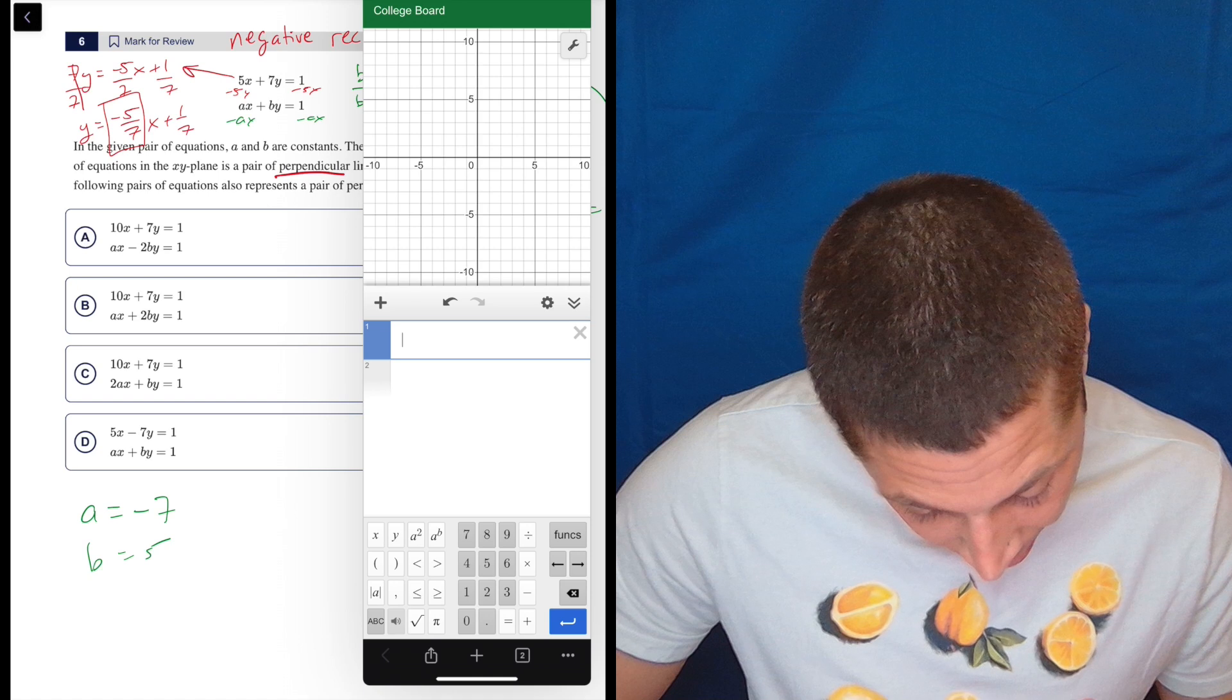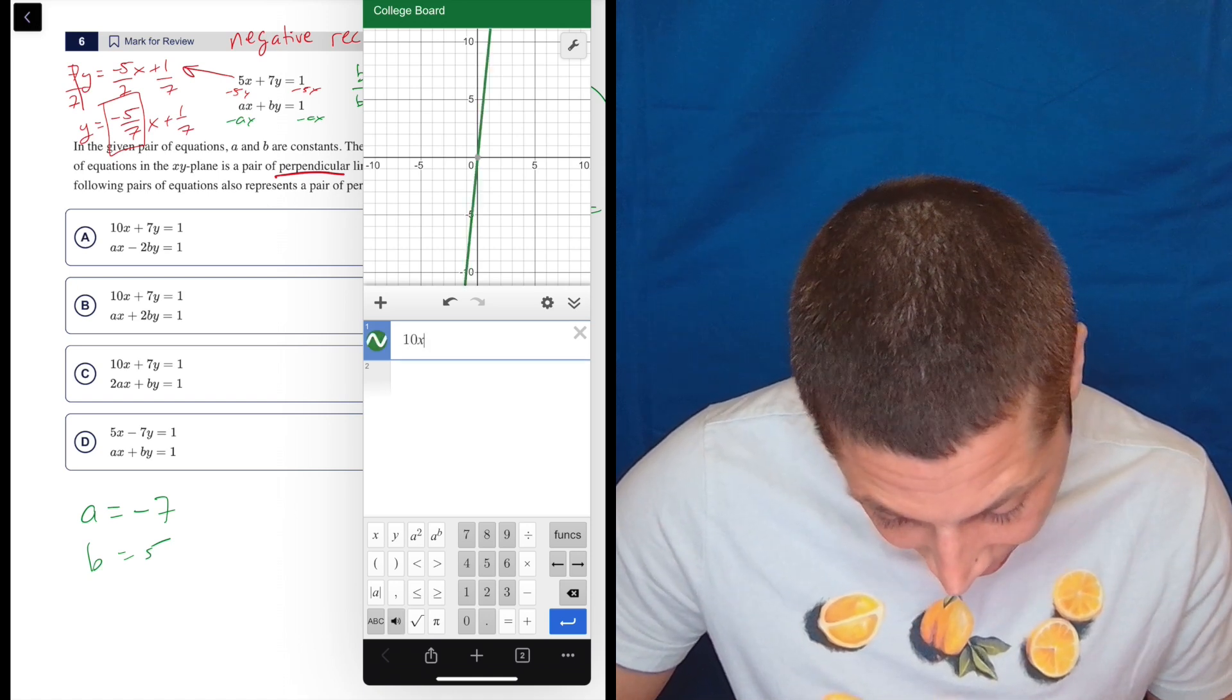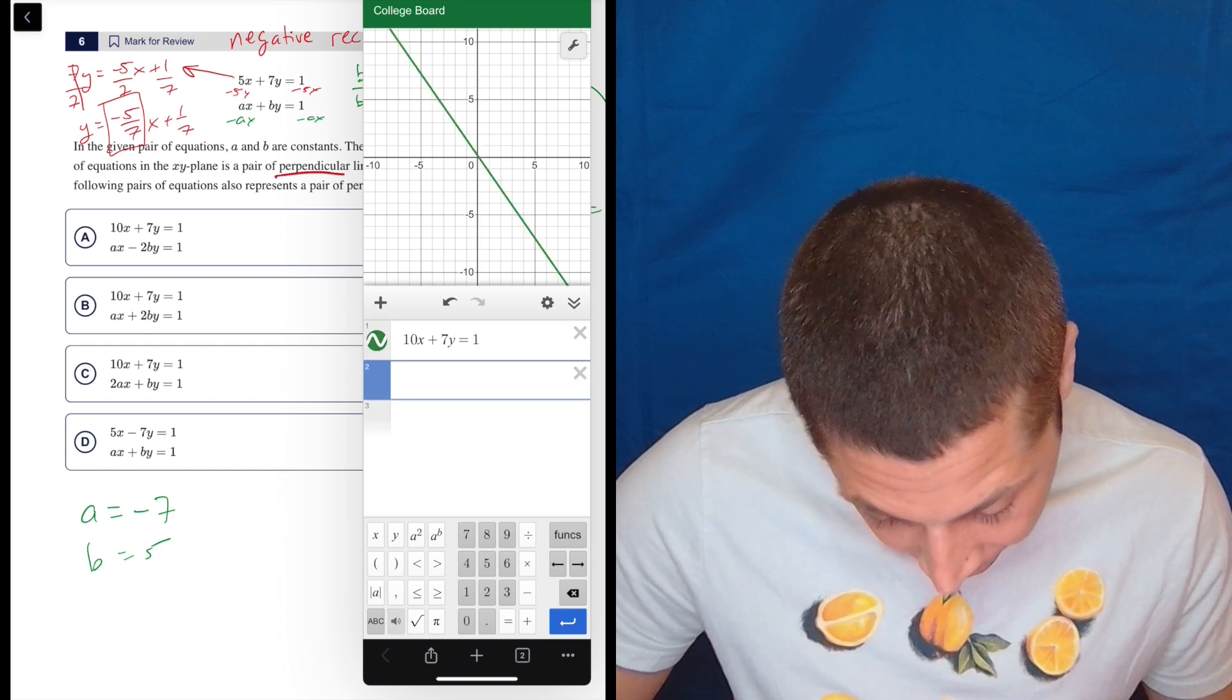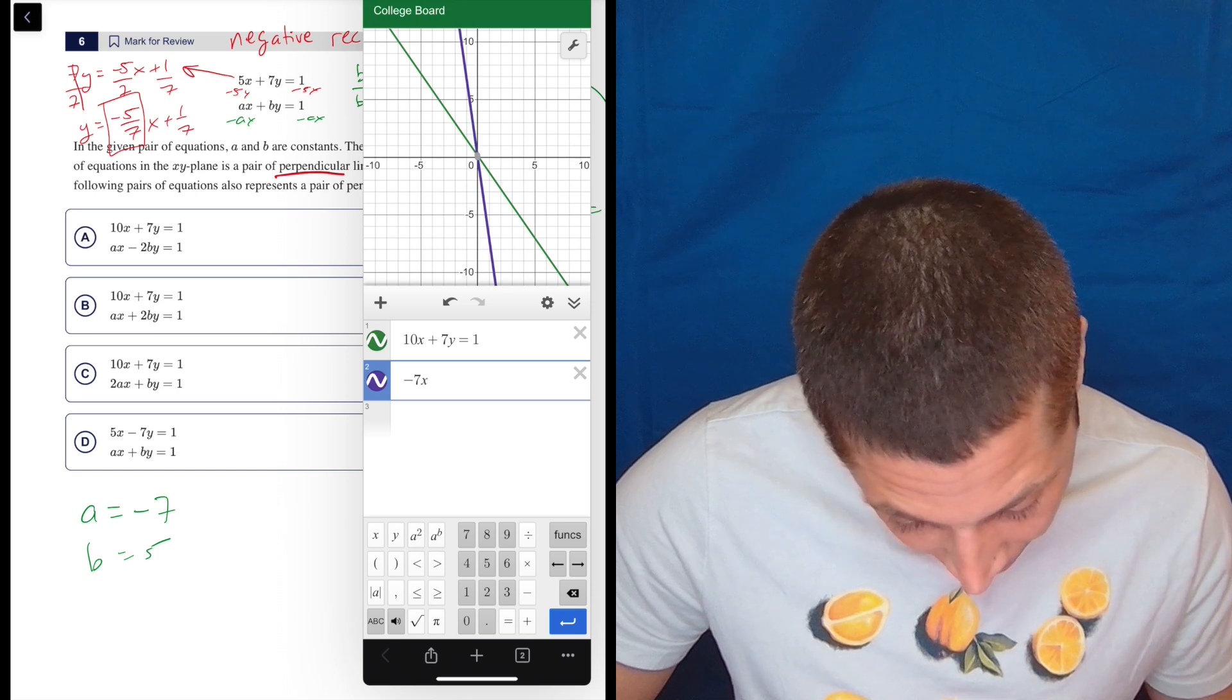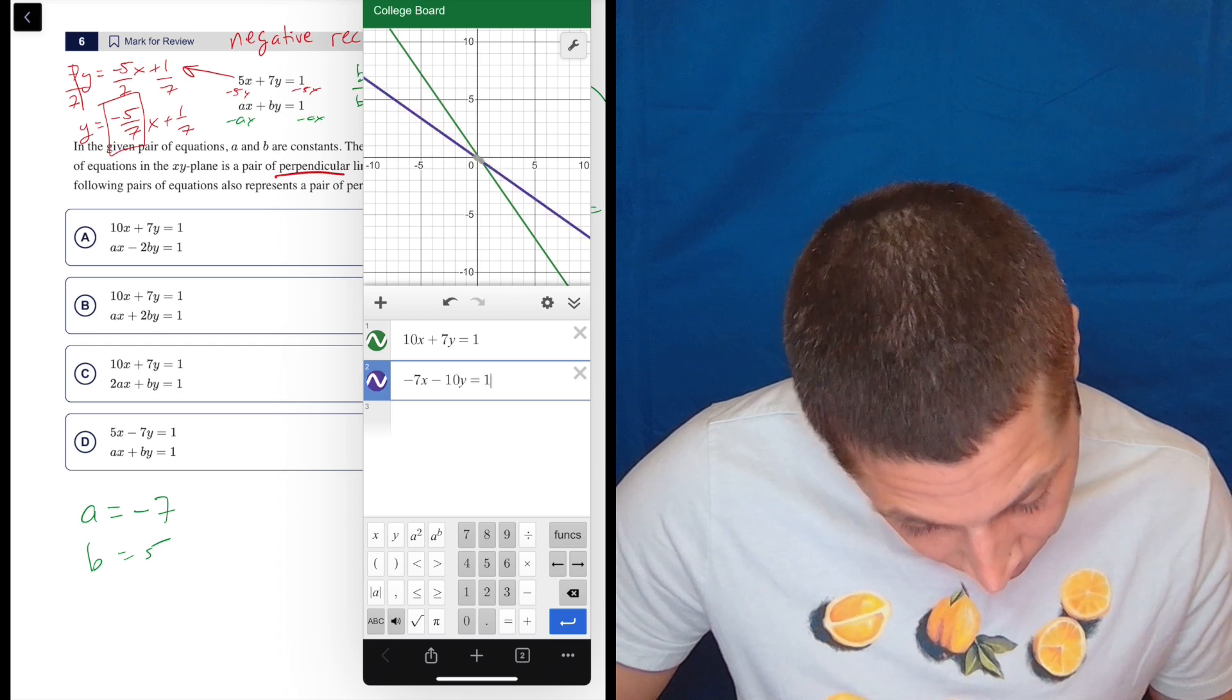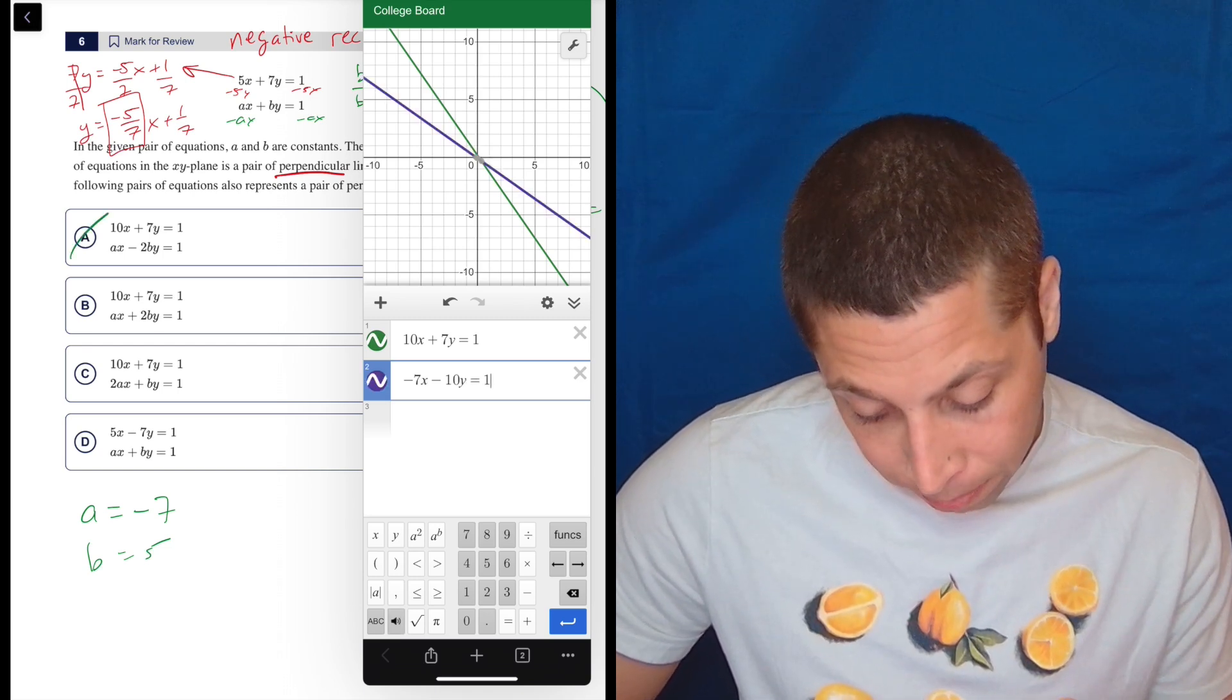Okay, so A, well, we can do this. So this would be 10. Choice A is 10x plus 7y is equal to 1. And negative 7x minus 2 times b is 10y equals 1. So what do we have? Those do not look perpendicular to me. They're going the same direction, basically. So no.